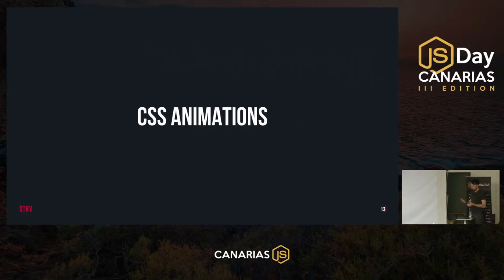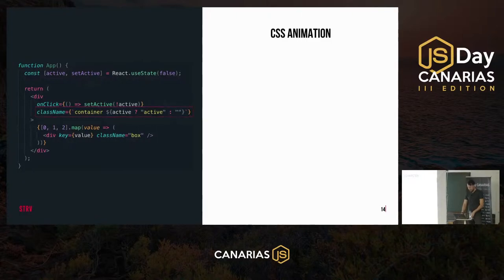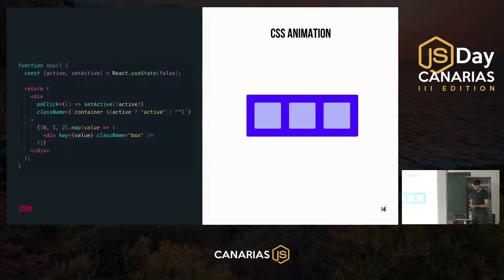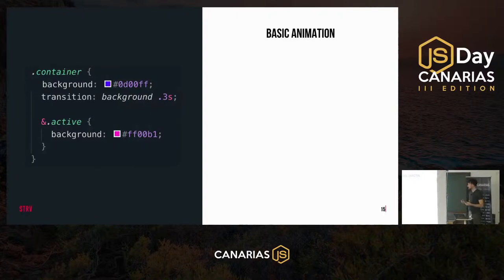So let's talk about the options we have when animating in React. We'll start with something simple such as CSS animations. Here we have a local state that tracks whether the component is active or not — just a boolean flag. We toggle an active class on the container div and render three child elements inside. Let's say first we want to animate the background of the container. We define a new background color for the active state, then use the transition property specifying the CSS property and duration.